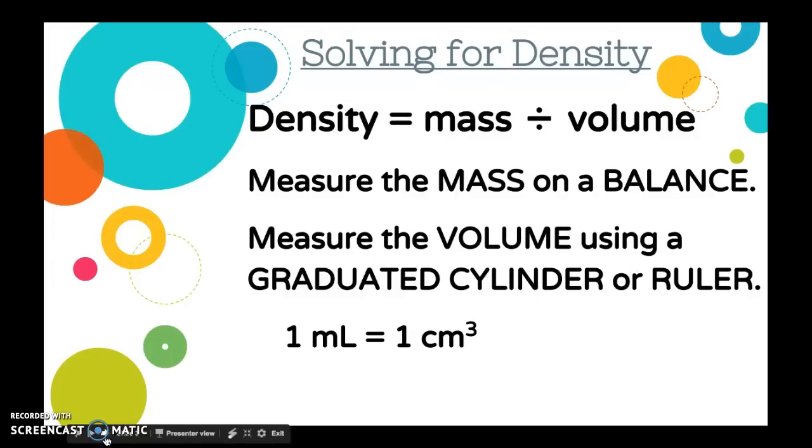We measured mass on the triple beam balance, and you'll notice that we went to the hundredths place because that's the precision that we go to. It reads to the tenths, so we guesstimate that one extra placeholder. And we measured volume using a graduated cylinder. If you use the bigger graduated cylinders, they should have been to the tenths place. If you use a ruler, you're usually measuring a solid and you're doing length times width times height.